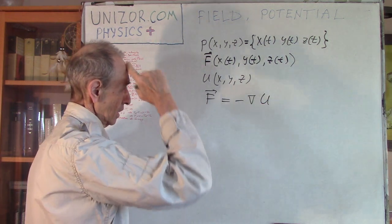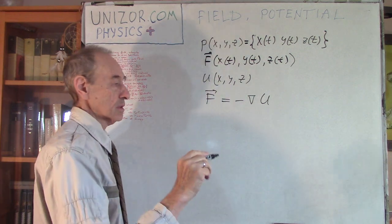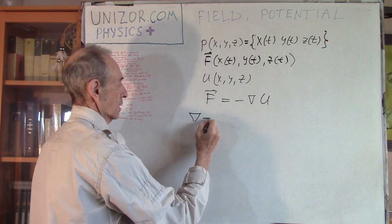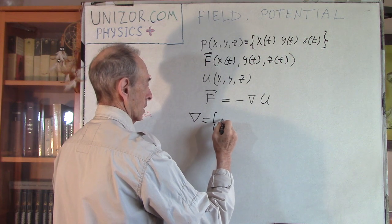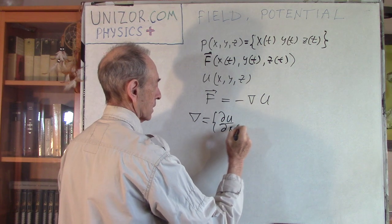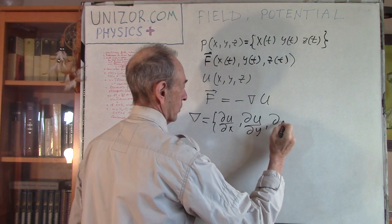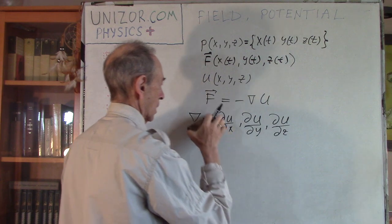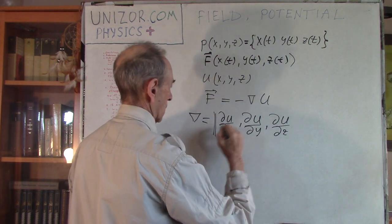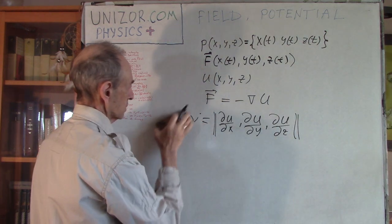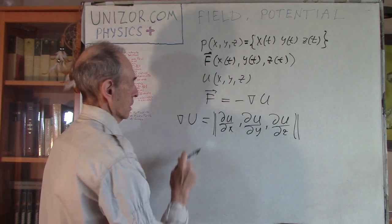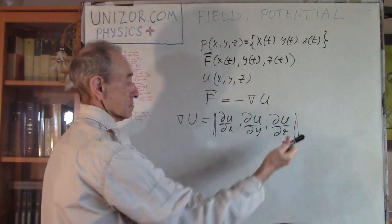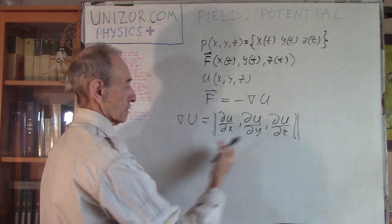Let me explain what NABLA is - it was introduced before in other parts of Unisor.com in Physics for Teens. NABLA is a vector: specifically the vector ∇U. U is a scalar function, but if you take partial derivatives by three arguments, it becomes three values which is basically a vector - a three-component vector.